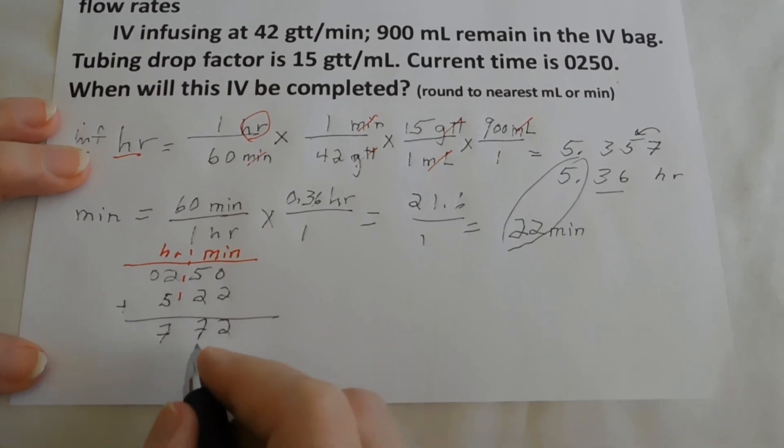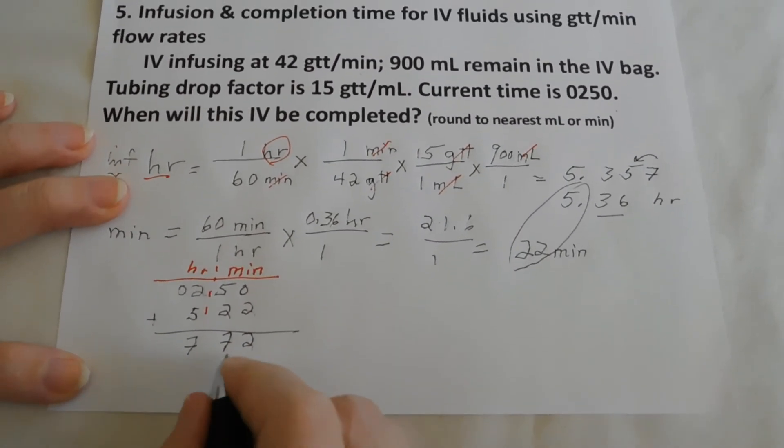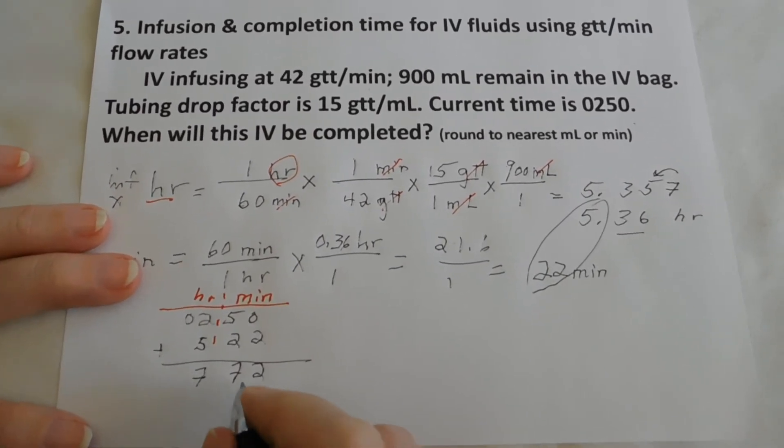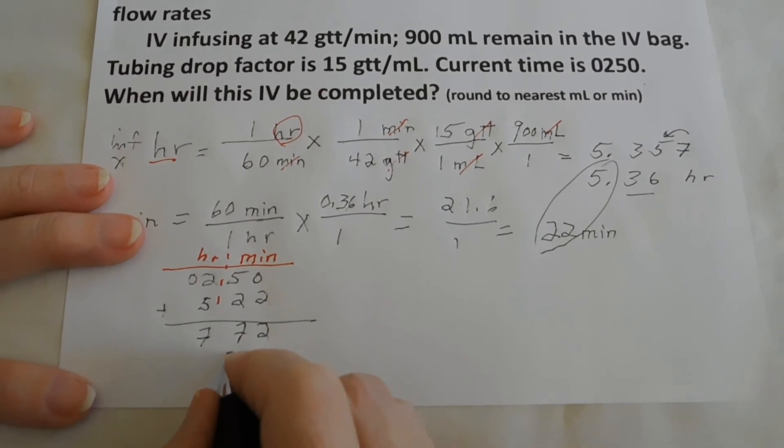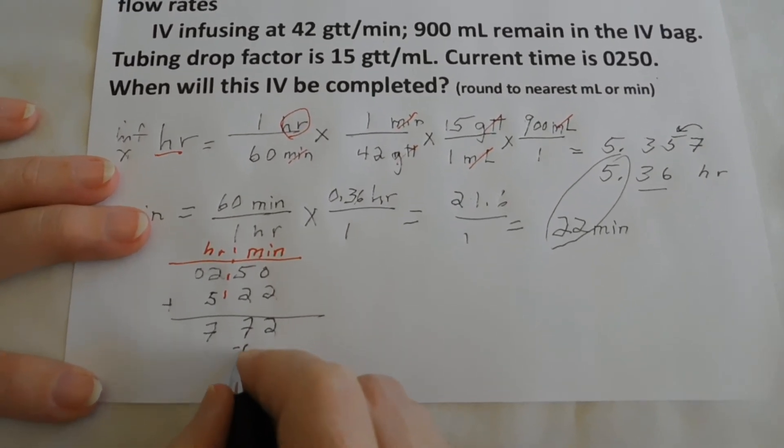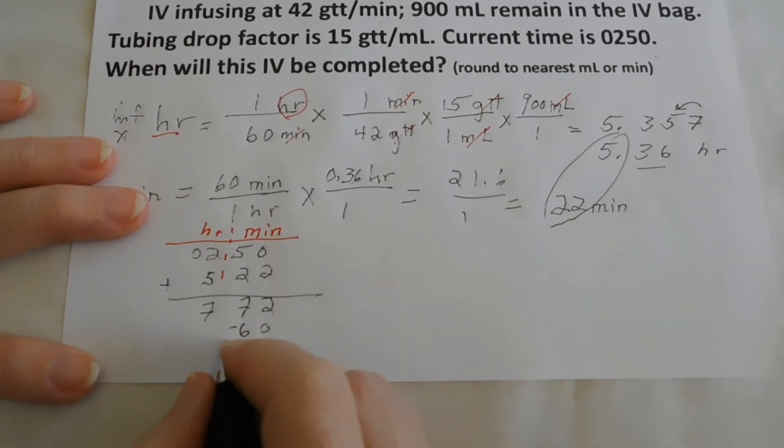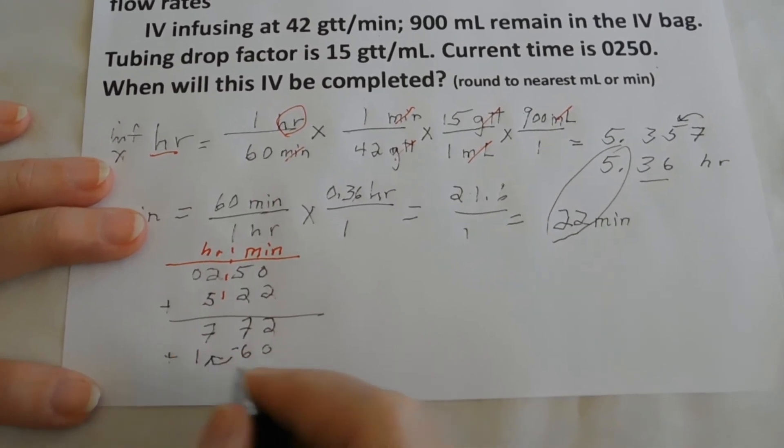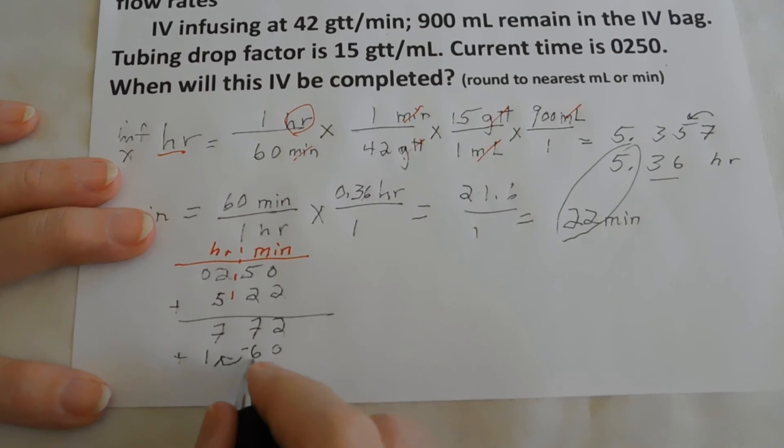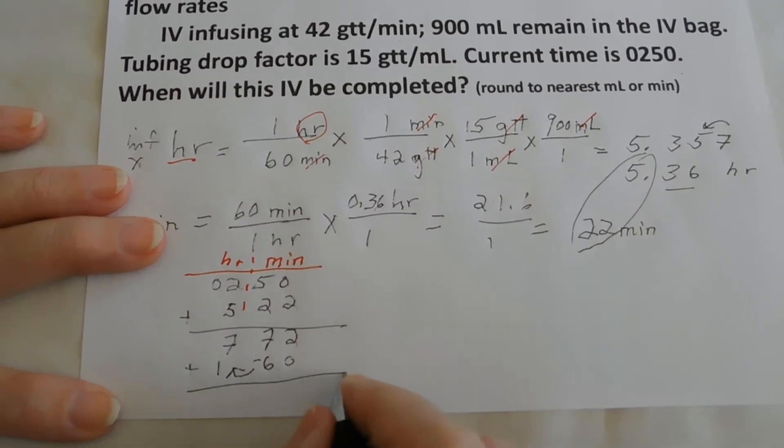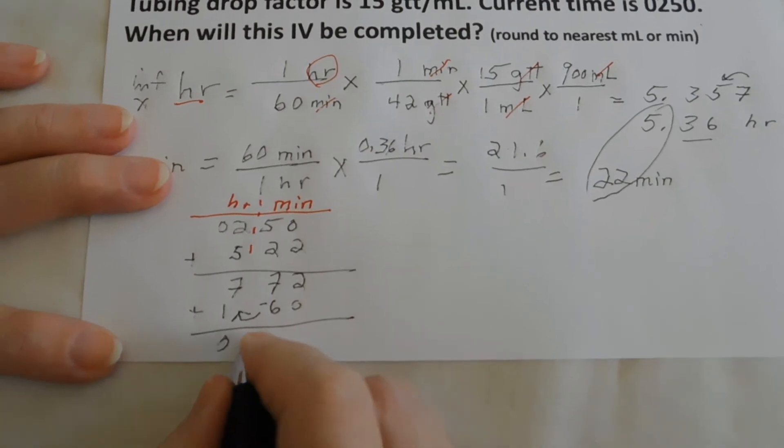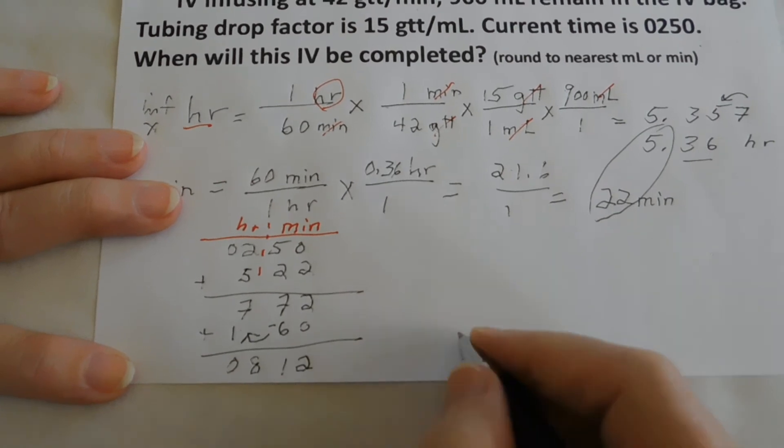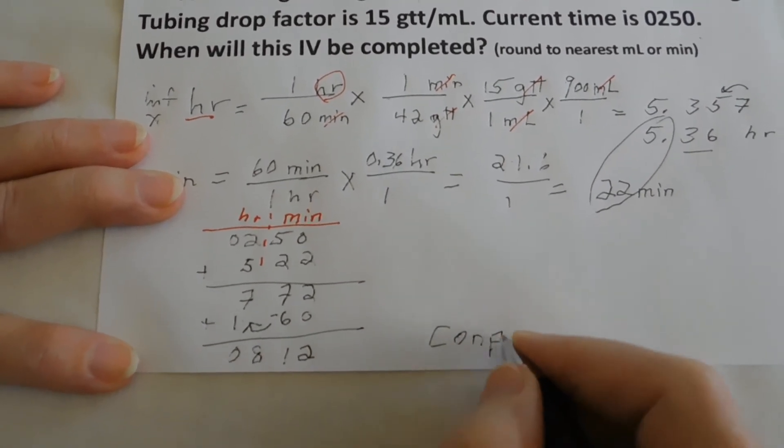We know that we need to now change this 72 minutes to something that's usable. And by doing that, we can subtract 60, add 1. So by subtracting 60 from our 72 minutes, we then can add to the hour column. We add those together. We get 0.812. So 0.812 is our completion time.